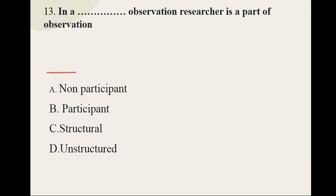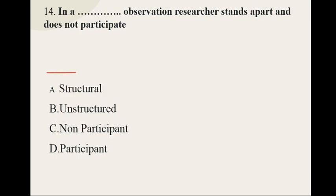Question number thirteen: In a dash observation, researcher is a part of observation — options are non-participant, participant, structural, and unstructured — and the correct option is participant.